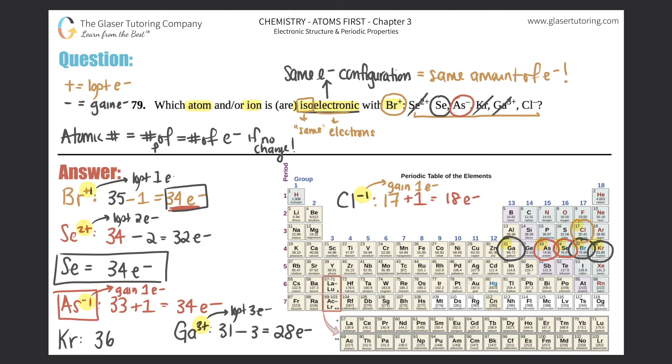Definitely not right. Bromine +1 had 34 electrons; this one has only 18, so that's out. That's your final answer. There's only two atoms and ions here that are isoelectronic with Br+: the selenium atom with no charge, and then the ion As-, arsenic -1, because they all had the same electron configuration, same amount of electrons.